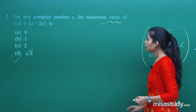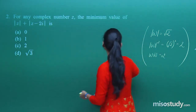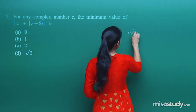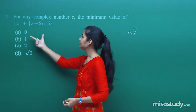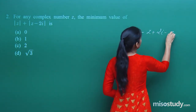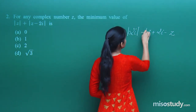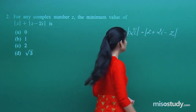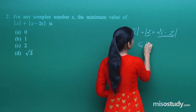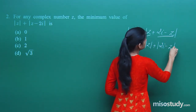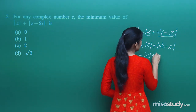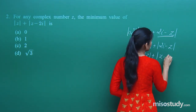Next question: for any complex number z, what is the minimum value of this expression? There is some manipulation required; otherwise the question is pretty easy. Just understand that 2 iota is involved and if you remember the triangle inequality you will be able to decode this. You can write this as z plus 2 iota minus z. Therefore the magnitude of this equals the magnitude of that. Considering z as one complex number and 2 iota minus z as another, you can write this as less than or equal to mod z plus mod of 2 iota minus z, which equals mod z plus mod of z minus 2 iota.